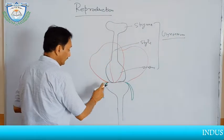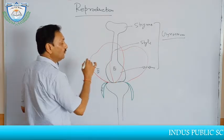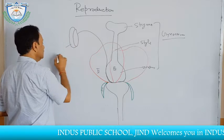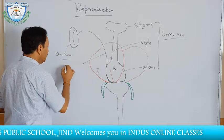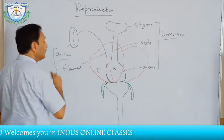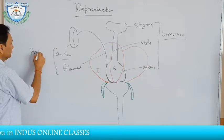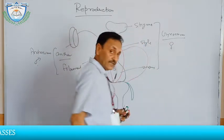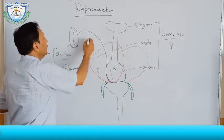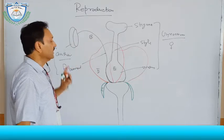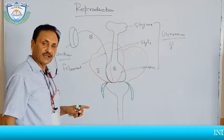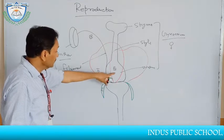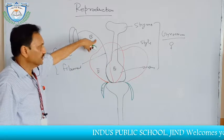In addition to the gynoecium, a fourth whorl is present consisting of the anther and the filament, which together form the androecium. So in a typical bisexual flower there are four whorls: two accessory whorls — calyx and corolla — and two essential whorls — androecium and gynoecium. The essential whorls are directly involved in gametogenesis and fertilization.